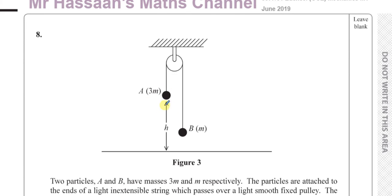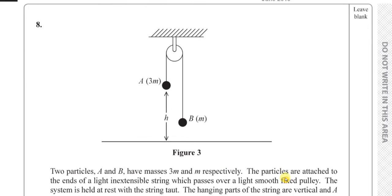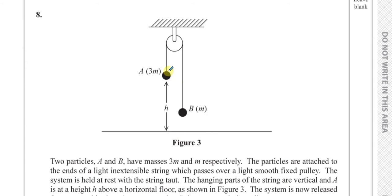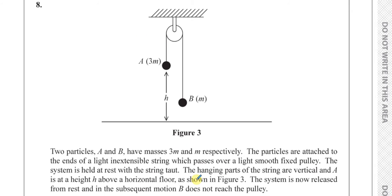It says two particles A and B have masses 3M and M respectively. The particles are attached to the ends of a light inextensible string which passes over a smooth fixed pulley. The system is held at rest with the string taut, the hanging parts of the string are vertical, and A is at a height H above a horizontal floor. The system is now released from rest and in the subsequent motion B does not reach the pulley.